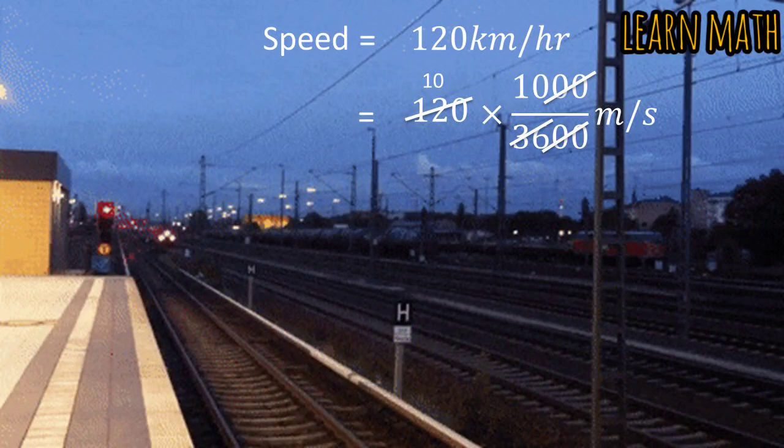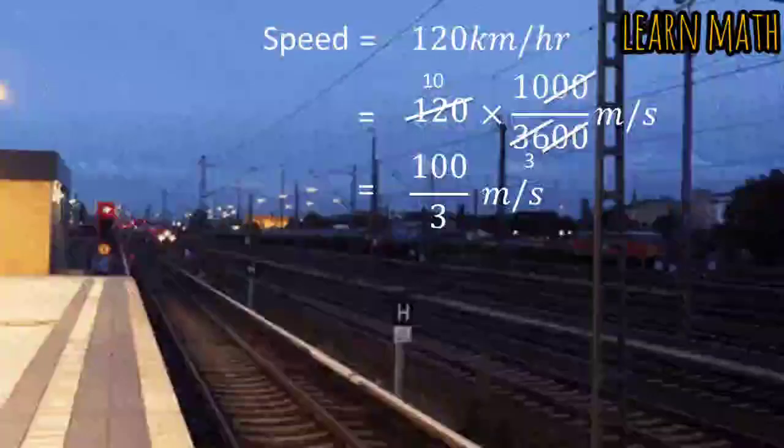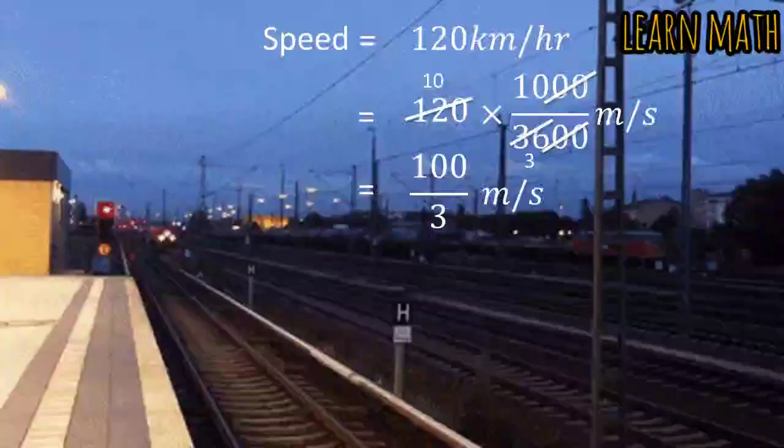So, 10 divided, 36 by 12 is 3. Simplify this and we will get 100 by 3. So, this is the speed of the train, meter per second.